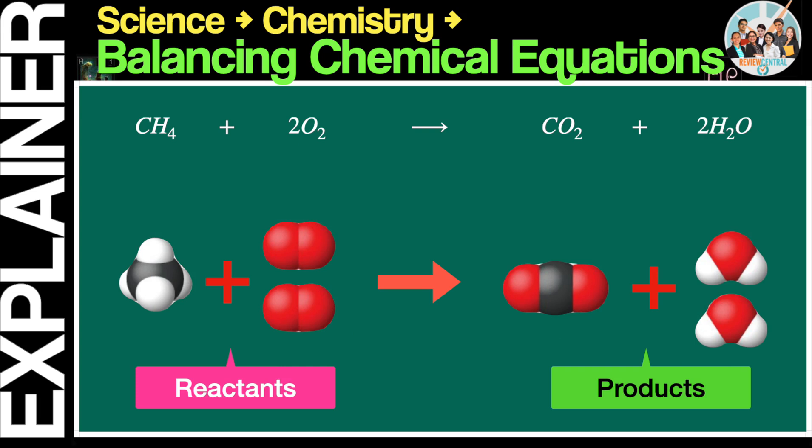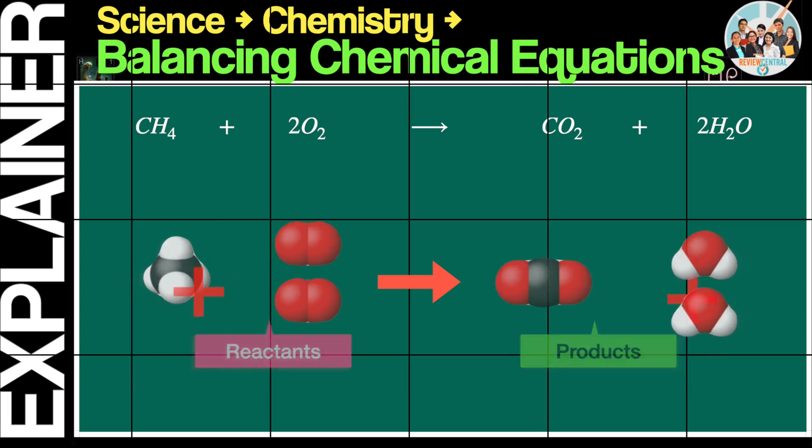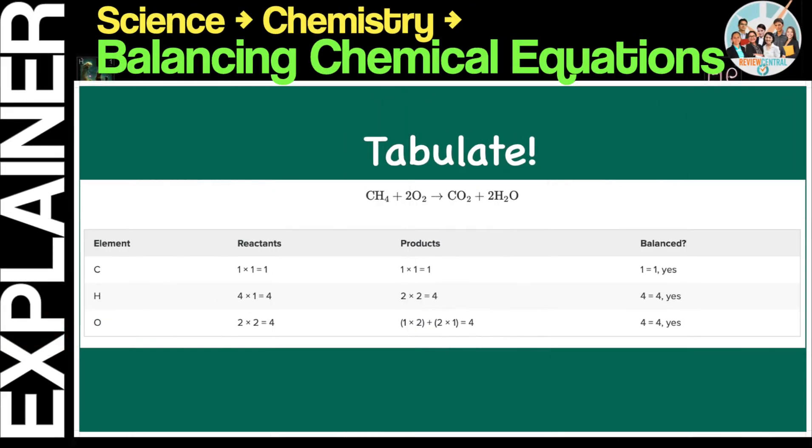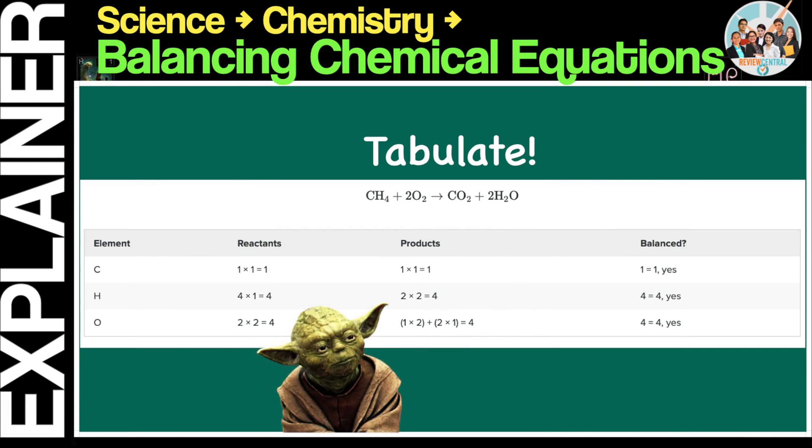But how do we know if the above equation is balanced? To balance a chemical equation, simply sum up the numbers of atoms on either side of the arrow, and compare these sums to ensure they are equal. The number of atoms for a given element is calculated by multiplying the coefficient of any formula containing that element, by the element subscript in the formula. A handy technique, especially if you're not yet proficient in balancing chemical equations, is to tabulate as shown. As you can see from the table, the above chemical equation is balanced on the onset.